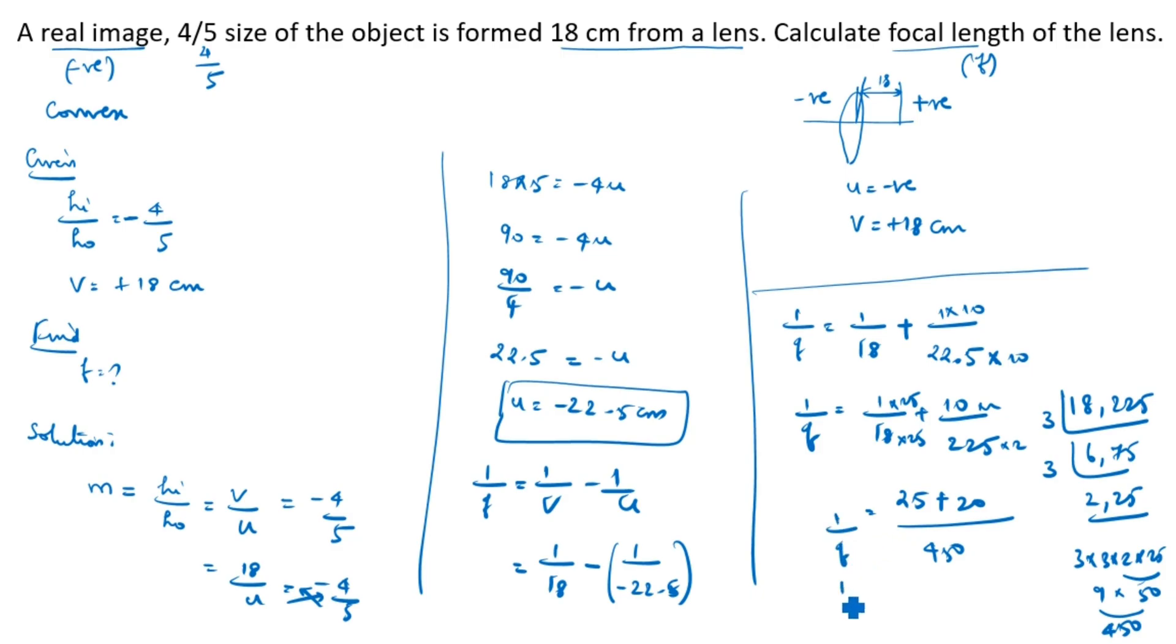1/f is equal to 25 plus 20 is 45 by 450. So 1 times, there is 10 times, so...